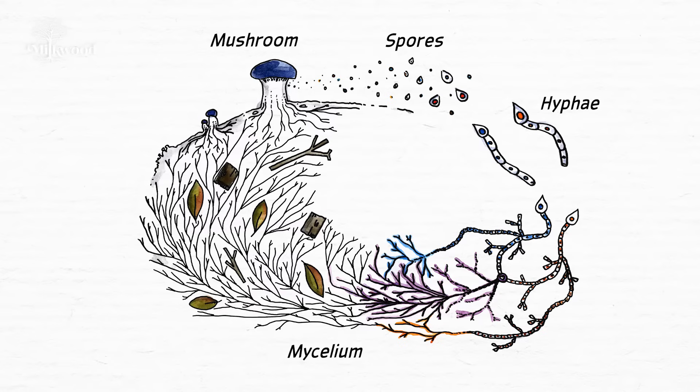For most macrofungi, this means that while the cycle can continue with the parent fungus, it can also start anew wherever spores land and find the right conditions.